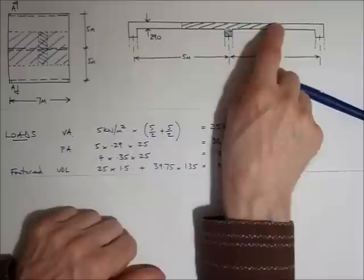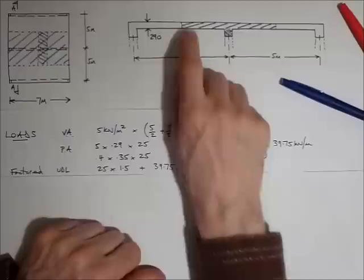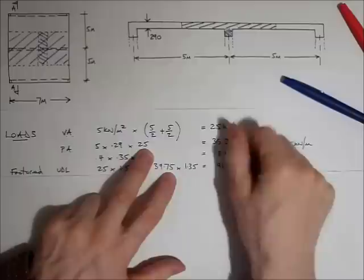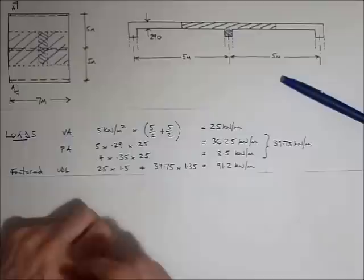Great. The permanent action is pretty similar. We're going to calculate the cross-sectional area of the slab, which loads the beam, and the little bit of the beam itself which is loaded, which has its own self-weight. So the slab is 5m times 0.29, because it's 290mm thick, by the density of concrete, which is 25kN/m³. So the slab weighs 36.25kN/m.